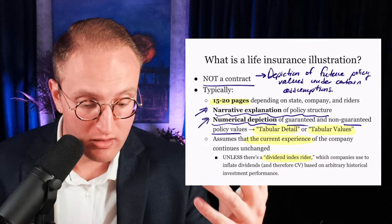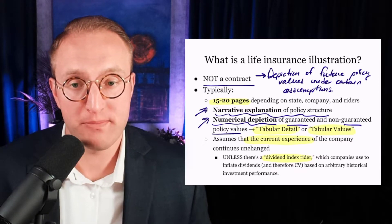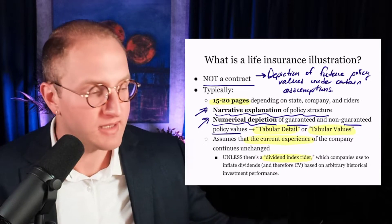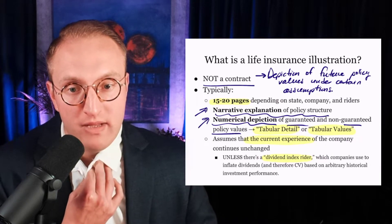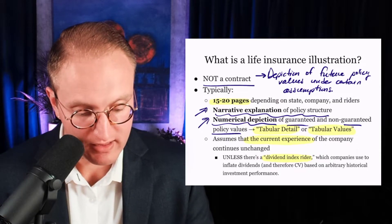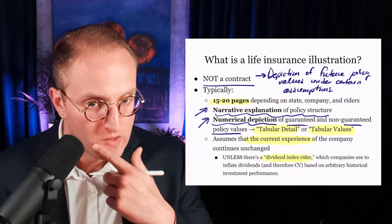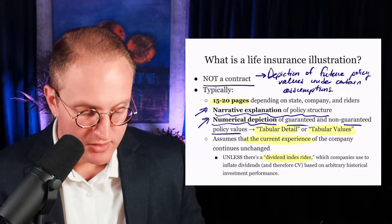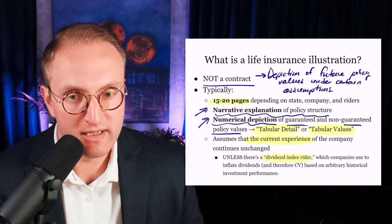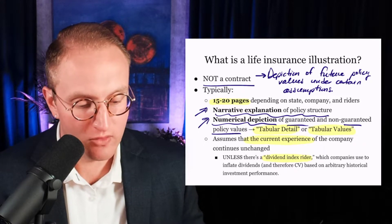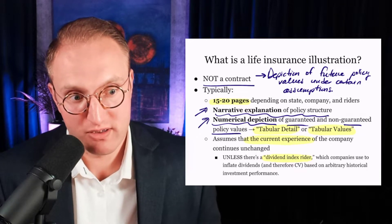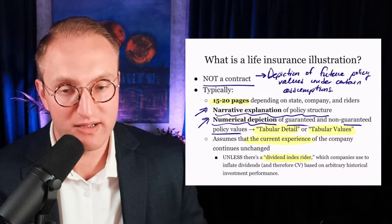Because the numbers on the page incorporate not just the current experience of the company and the assumed premium payments from the client, but also some sort of bonus coming from alleged gains in an index. To be hyper clear: with dividend index riders, it's not that you're actually investing. The company credits certain amounts — they'll multiply the dividend in a certain fashion based on the performance of an index. You as an owner of whole life with a dividend index rider are not invested in the stock market. A life insurance salesperson without a securities license can sell a whole life contract with a dividend index rider — they're not selling a security.